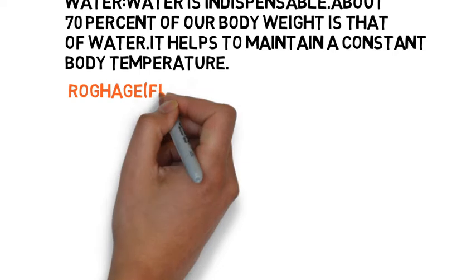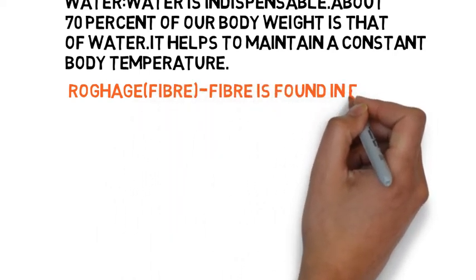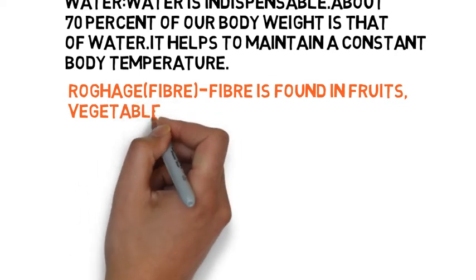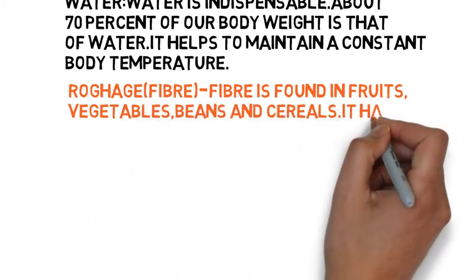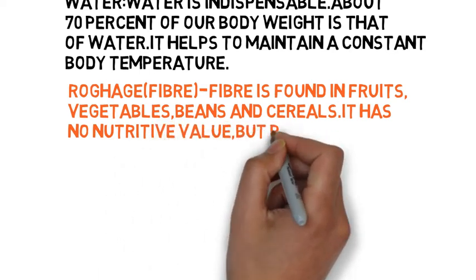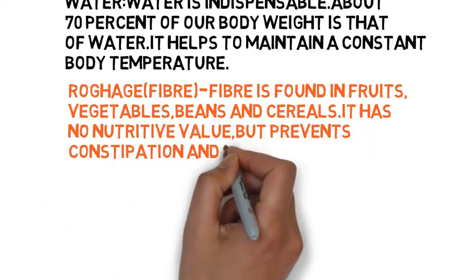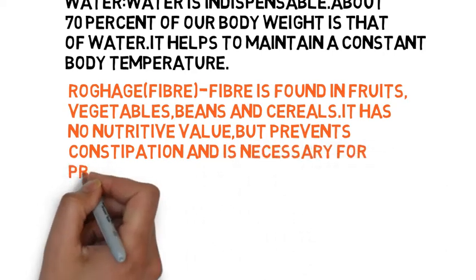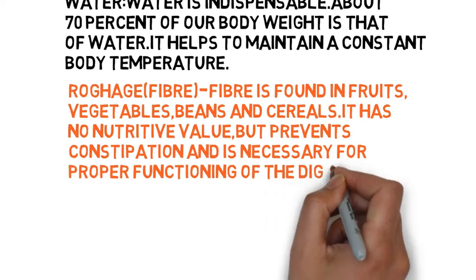Roughage, also called fiber, is found in fruits, vegetables, beans, and cereals. It has no nutrient value but prevents constipation and is necessary for proper functioning of the digestive system.